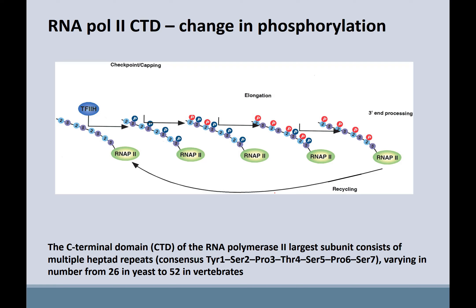The two main states of phosphorylation they are looking at are called S5P and S2P. The S stands for the amino acid serine. There's a heptad repeat on the C-terminal domain — a repeat of tyrosine, serine, proline, threonine, serine, proline, serine — and this heptad repeat repeats over and over again.